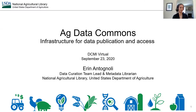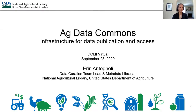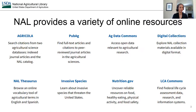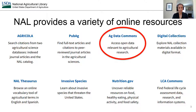I'm here today to talk about the Ag Data Commons, USDA's general Ag Data catalog and repository, which is designed to help USDA researchers publish and disseminate data products. The National Agricultural Library is one of five national libraries of the United States. It houses one of the world's largest collections devoted to agriculture and its related sciences. NAL provides a variety of online resources, including journal articles, digital collections, and other materials relating to agriculture.